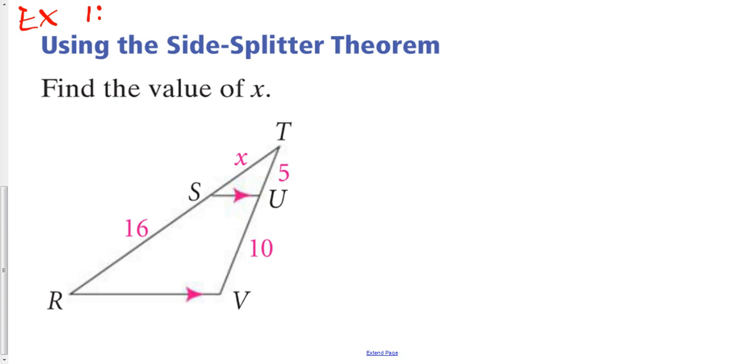So what I'm going to say here is that I have the following: I have x over 16 equals 5 over 10. So what they're saying is each of those sections is proportional. You don't have to do the addition thing in this case. You just can set them up right away. So then you cross multiply, you get 10x equals 80, and that makes x equal 8. And that is really all there is to it. Pretty straightforward.